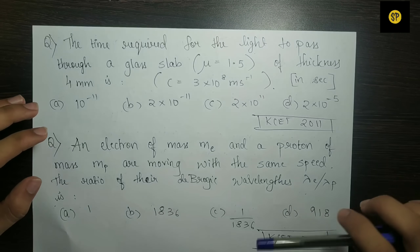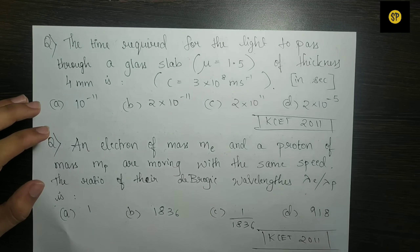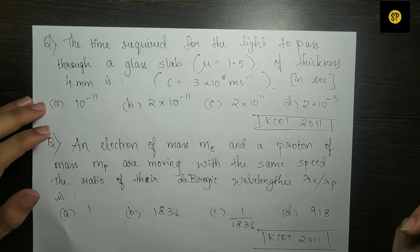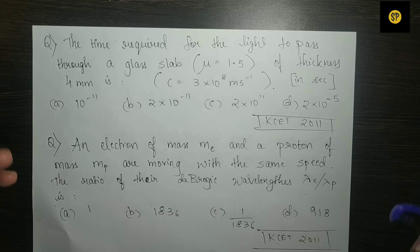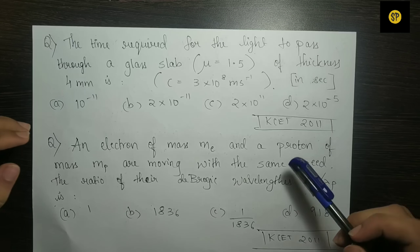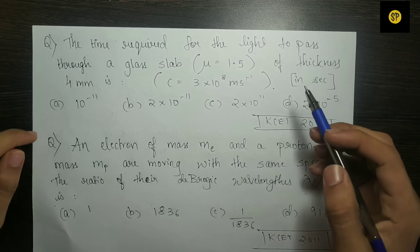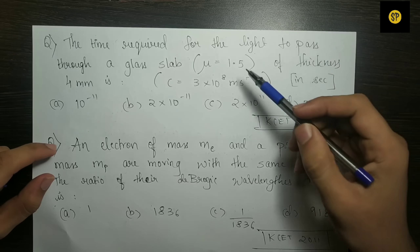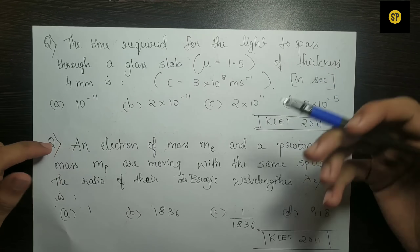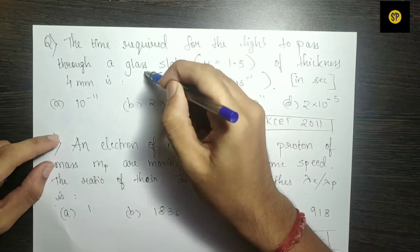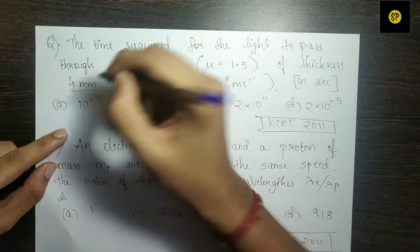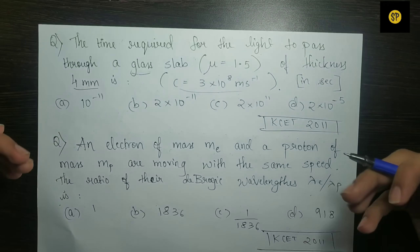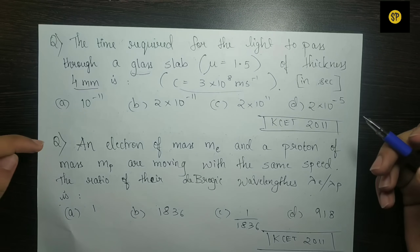The time required for light to pass through a glass slab with refractive index mu equal to 1.5 and thickness 4 mm. The speed of light is given, so we calculate the time in seconds.